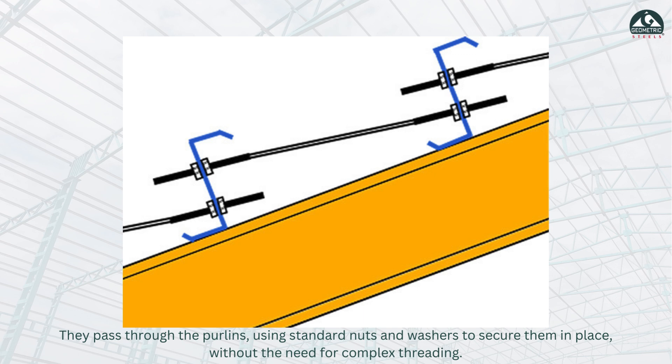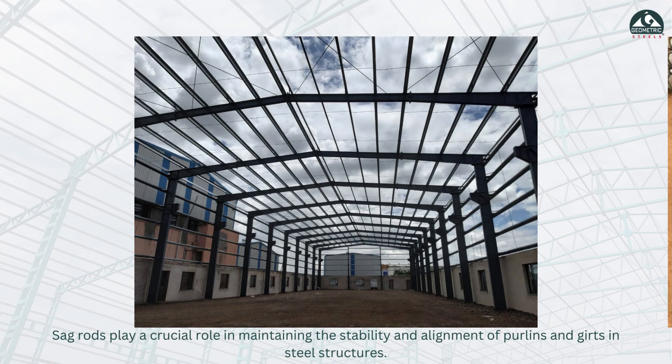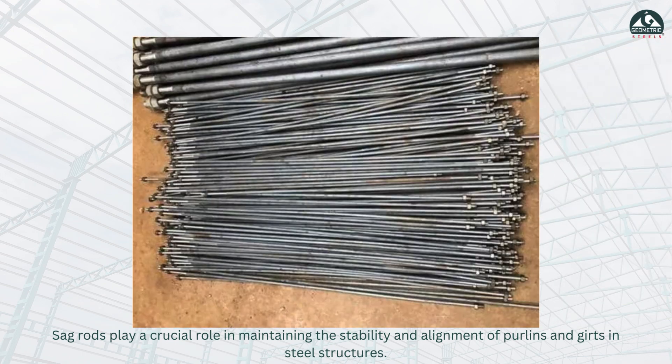Sag rods secure purlins without the need for complex threading. They play a crucial role in maintaining the stability and alignment of purlins and girts in steel structures.